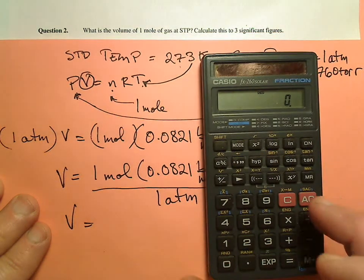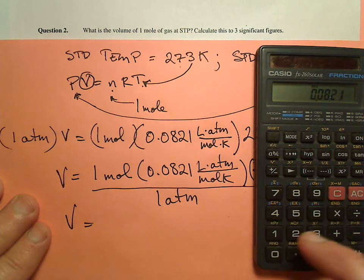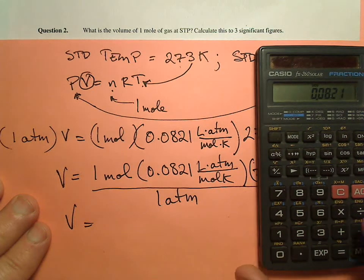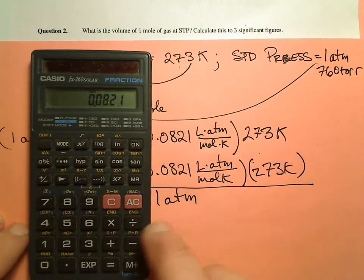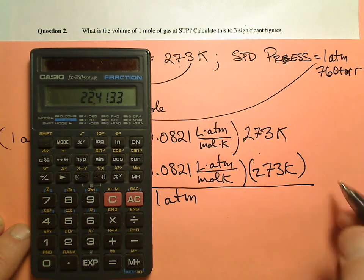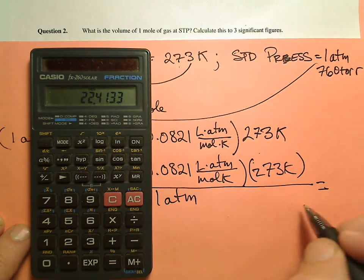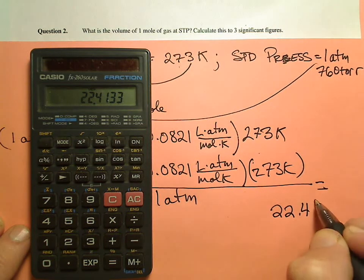Let's see. We get, I'm not going to worry about the 1s. 0.0821 times 273 equals, look at that, 22.4 liters.